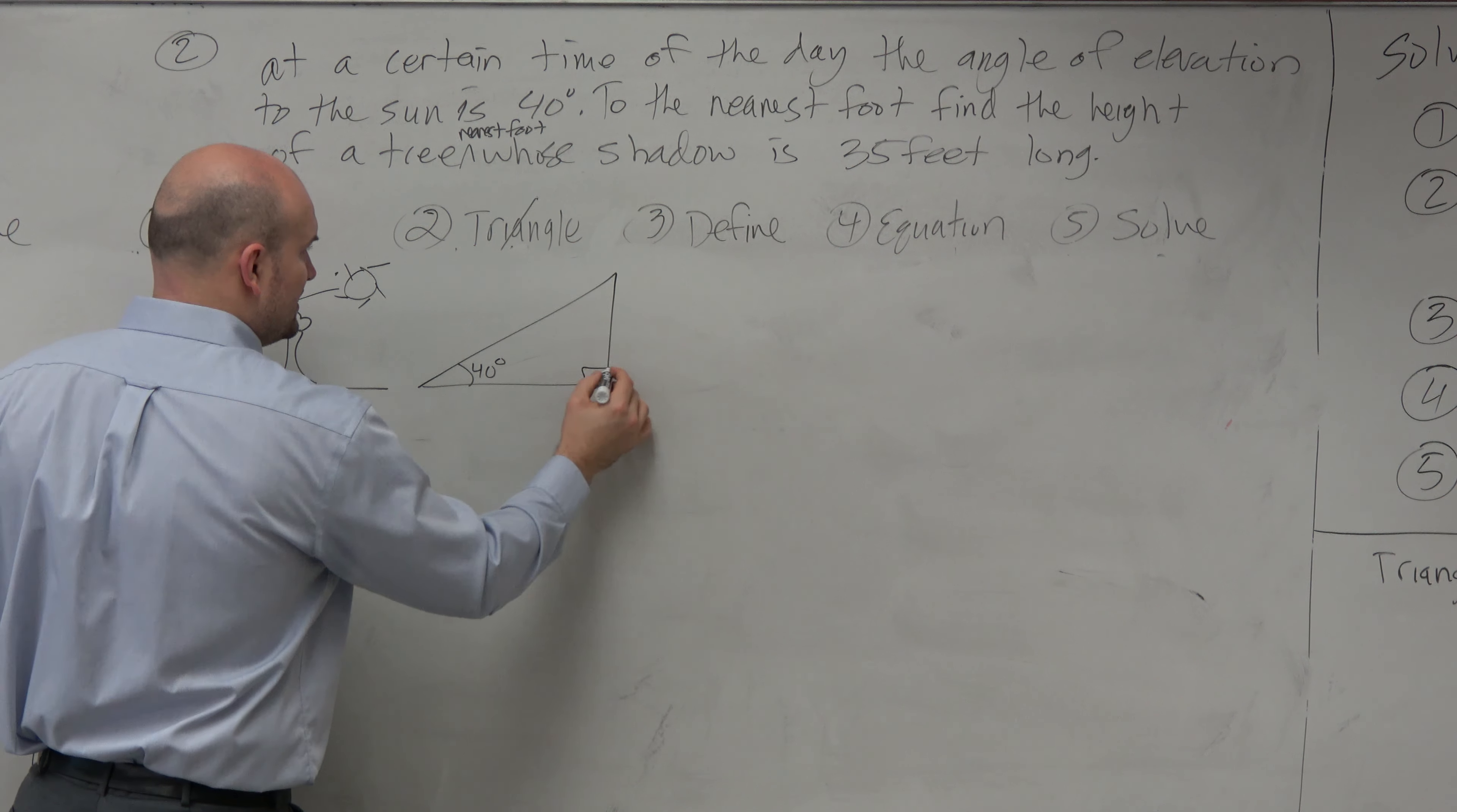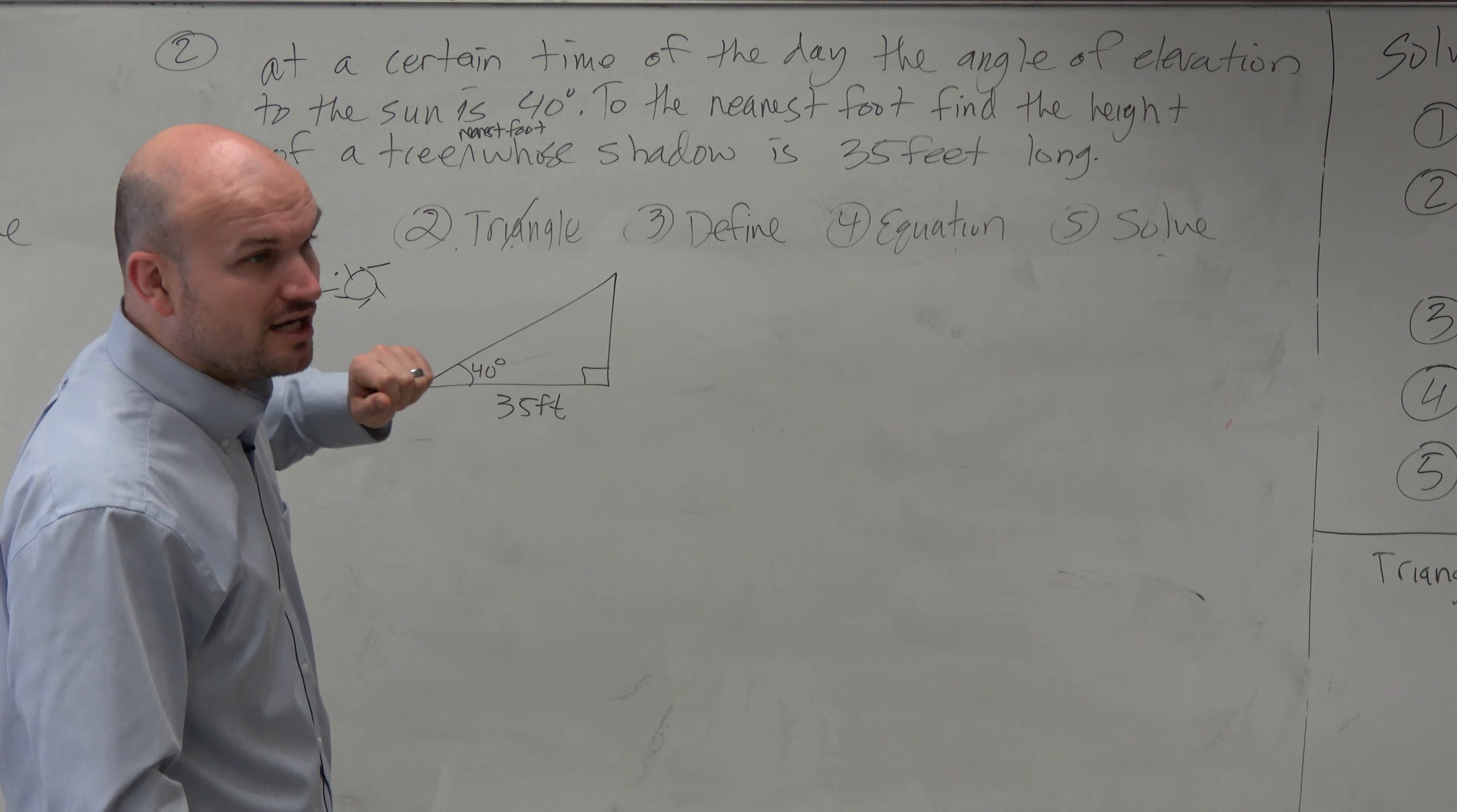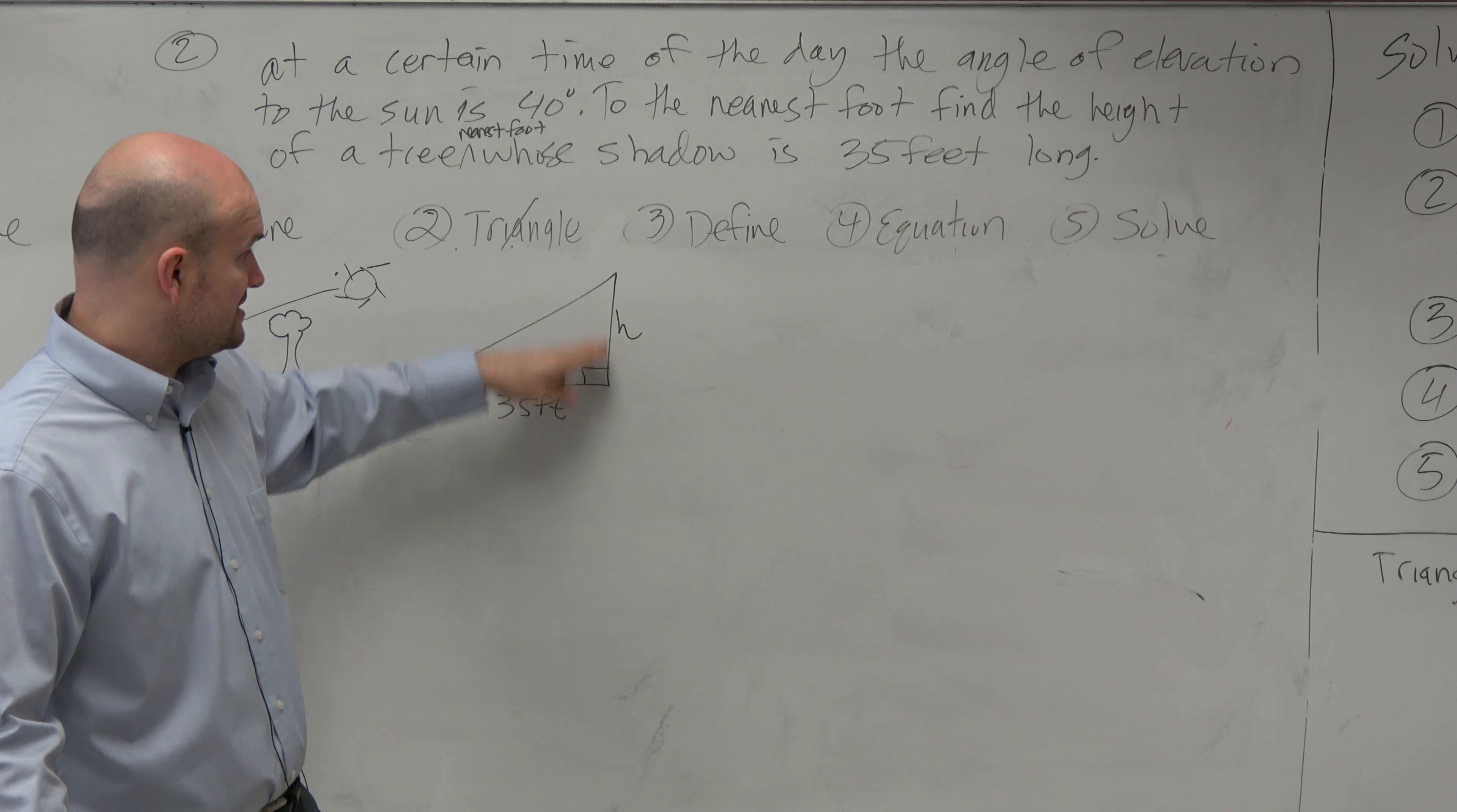And now, basically, here is my triangle. And now I need to figure out, well, what is it I'm trying to solve for? Well, it says try to find the height of the tree. So let's call this h, right? So now I've just created a variable, h, which represents the height of the tree.